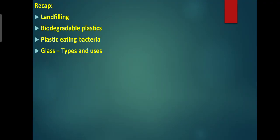The next topic is glass — types of glass and uses of glass. Glass can be found wherever we look: a glass window, a glass mirror, or a glass light bulb. Glass is one of the world's oldest and most versatile human-created materials. It is the only material that we can recycle over and over again without losing its quality.